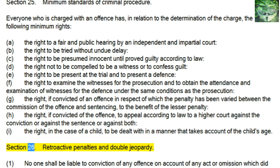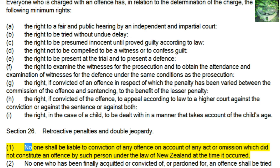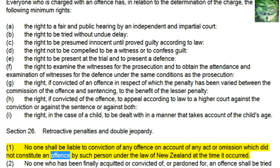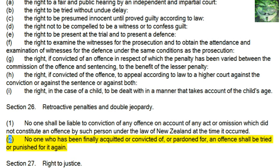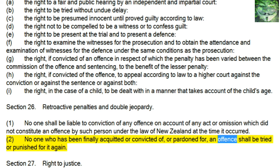Section 26, Retroactive Penalties and Double Jeopardy: 1. No one shall be liable to conviction of any offense on account of any act or omission which did not constitute an offense by such person under the law of New Zealand at the time it occurred. 2. No one who has been finally acquitted or convicted of, or pardoned for, an offense shall be tried or punished for it again.